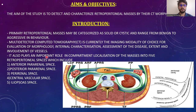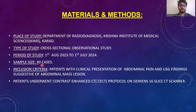CT also plays an important role in compartment localization of masses into five retroperitoneal spaces: anterior pararenal space, posterior pararenal space, perirenal space, central vascular space, and iliopsoas space. The study was conducted at the Department of Radiodiagnosis at Christian Institute of Medical Sciences, Karad. It is a cross-sectional study from August 1, 2023 to July 1, 2024, with a sample size of 40 cases.